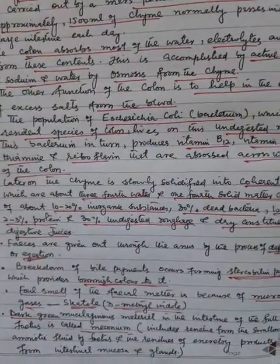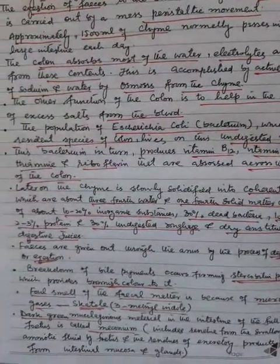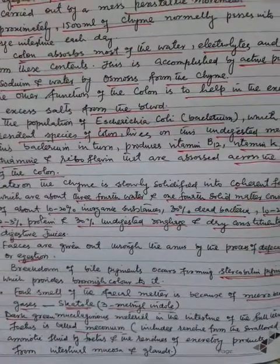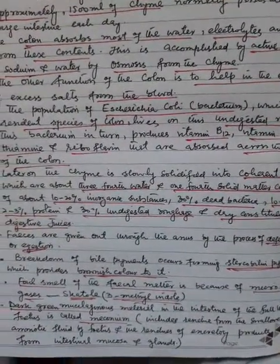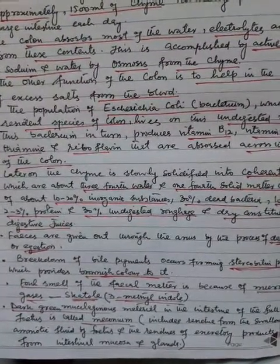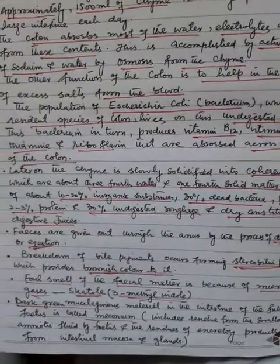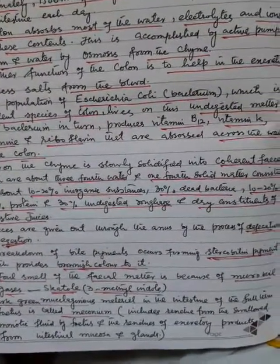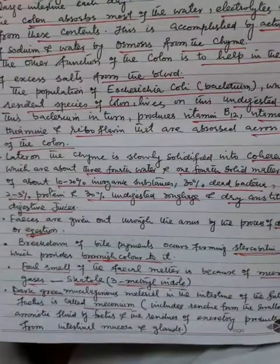The population of Escherichia coli, the bacterium that is a resident species of the colon, lives on this undigested matter. This bacterium in turn produces vitamin B12, vitamin K, thiamine, and riboflavin, which are absorbed across the wall of the colon.